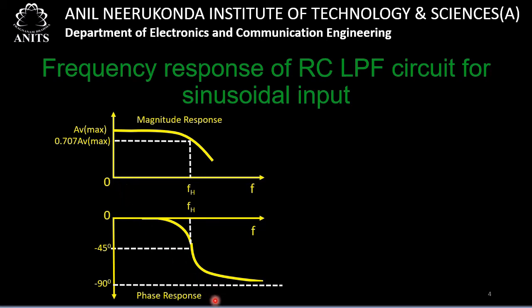In the phase response, at fH the angle is found to be 45 degrees. With increasing frequency the angle approaches 90 degrees, but the curve never actually touches the 90-degree line because it only reaches that value at f = infinity.